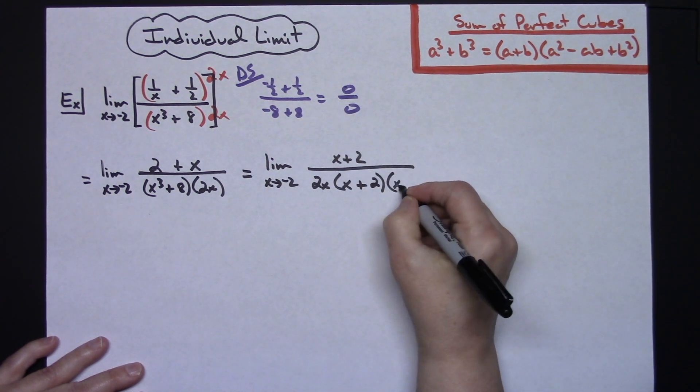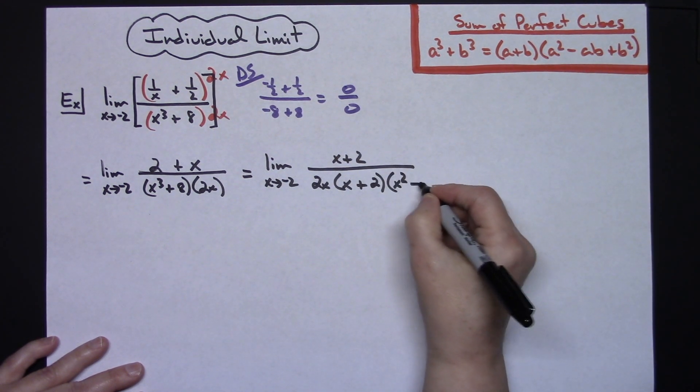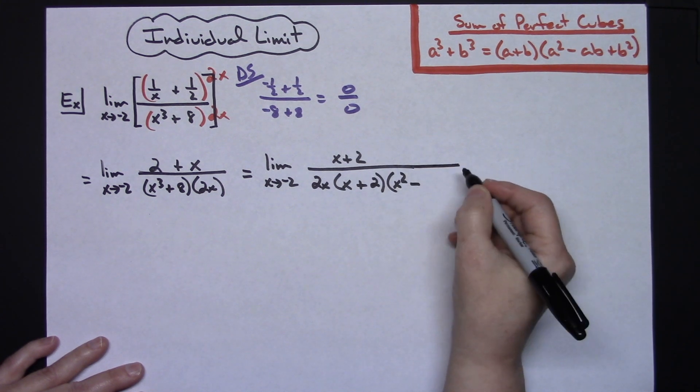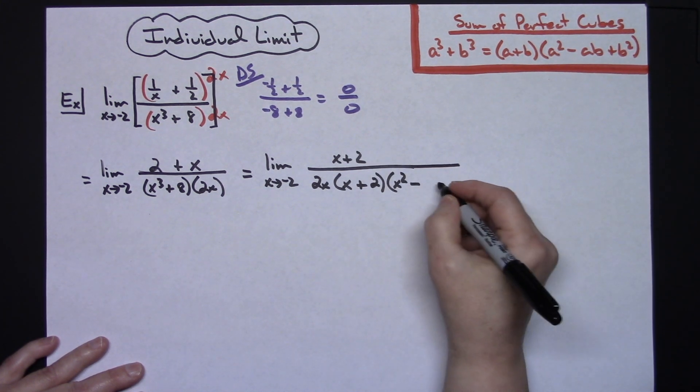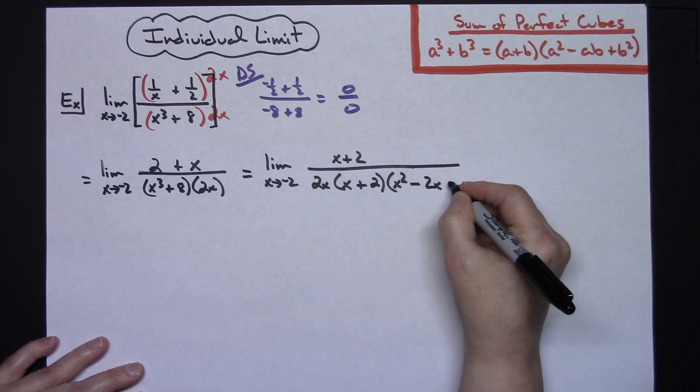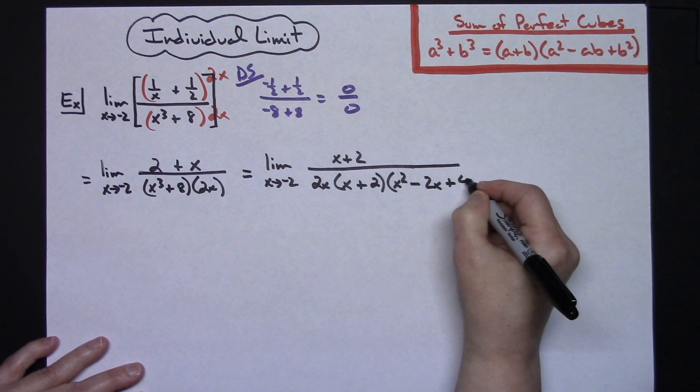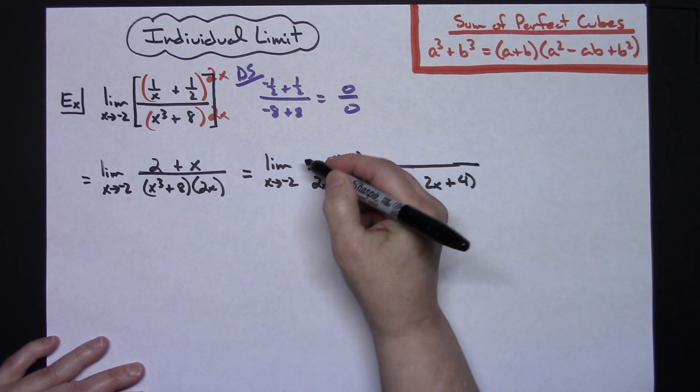Now I'm going to follow this: square our first term, which would be an x squared, opposite signs, and then a times b is going to give me a 2x. Then always positive, and square the last one's going to give me a 4.